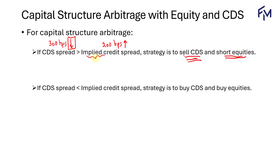The implied credit spread affects the equity value. If the CDS spread is lower than the implied credit spread — for example, the CDS spread is 300 basis points and the implied credit spread is 400 basis points — we'll expect the CDS spread to increase, meaning the buyer of the CDS will gain, so we buy CDS. We'll also expect the implied credit spread to drop, which means the equity value will increase. So equities are undervalued and we should buy equities. Think about convergence — the mispricing converging towards zero — as an easy way to remember and understand the strategy.